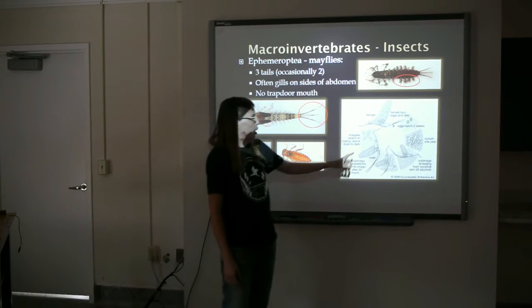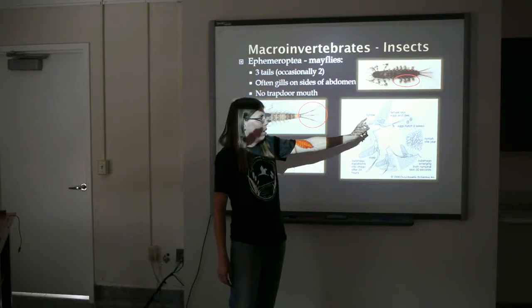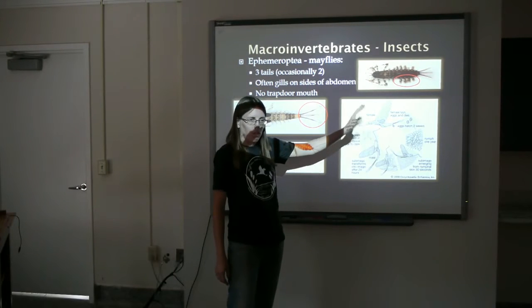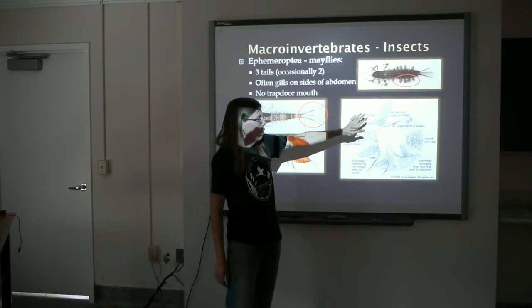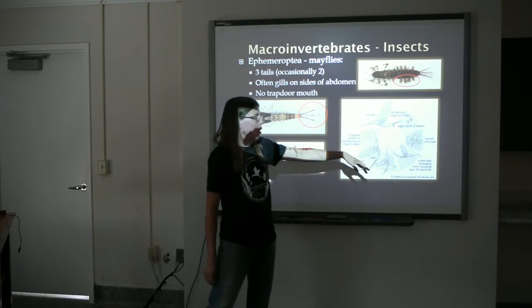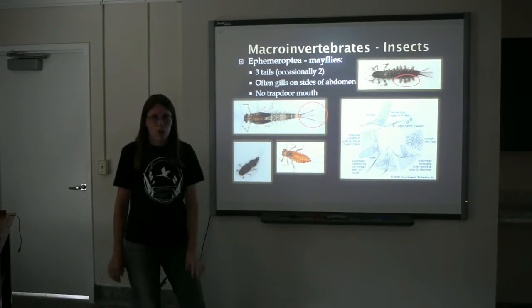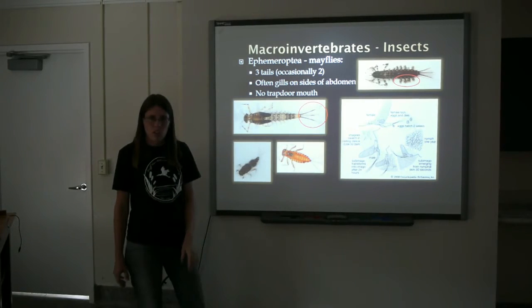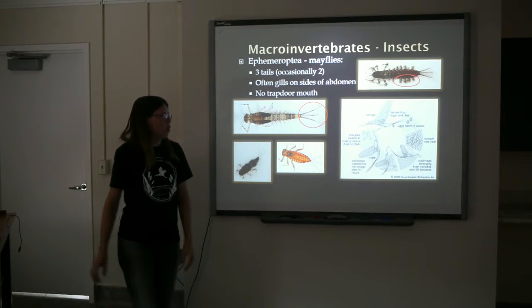The mayfly is another one who has a life cycle that involves a terrestrial adult form. Eggs are laid in the water, and the nymphs are in the water for around a year before emerging as adults to repeat the process.